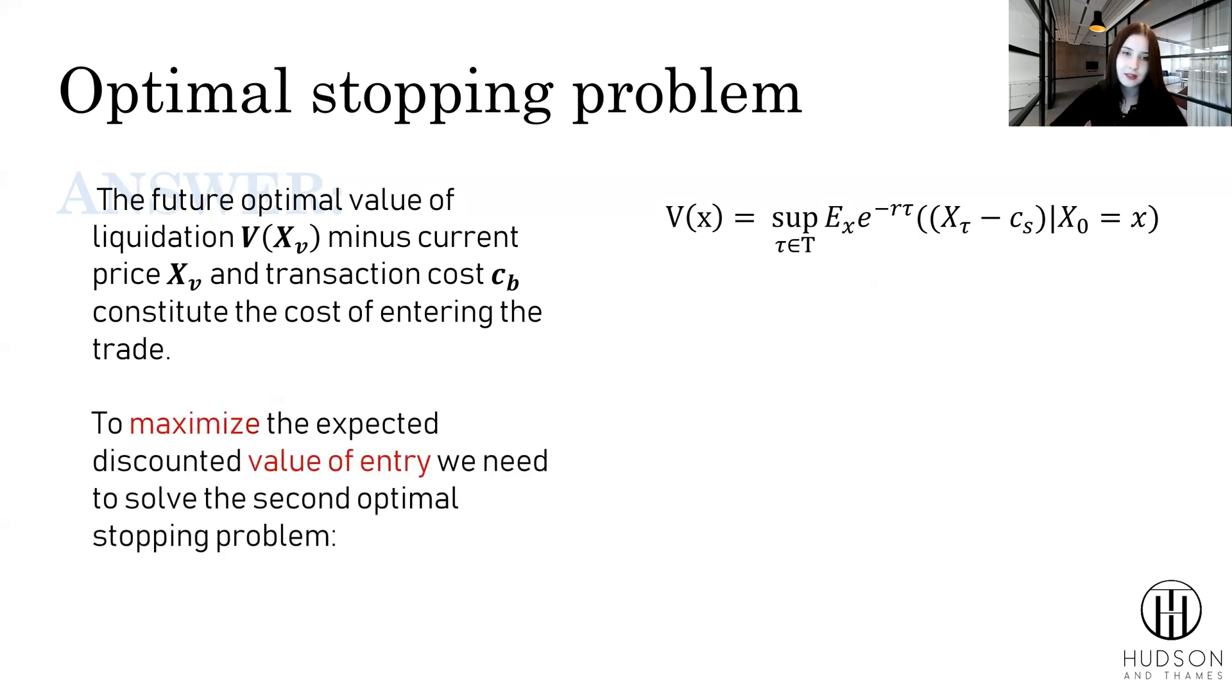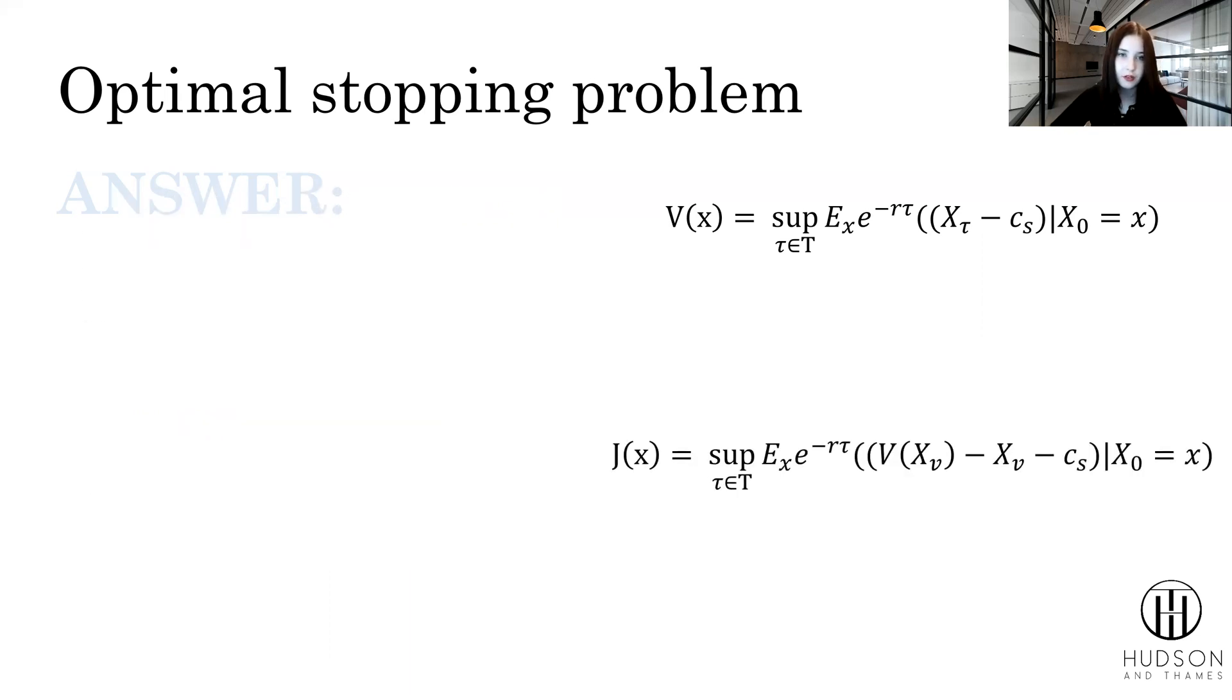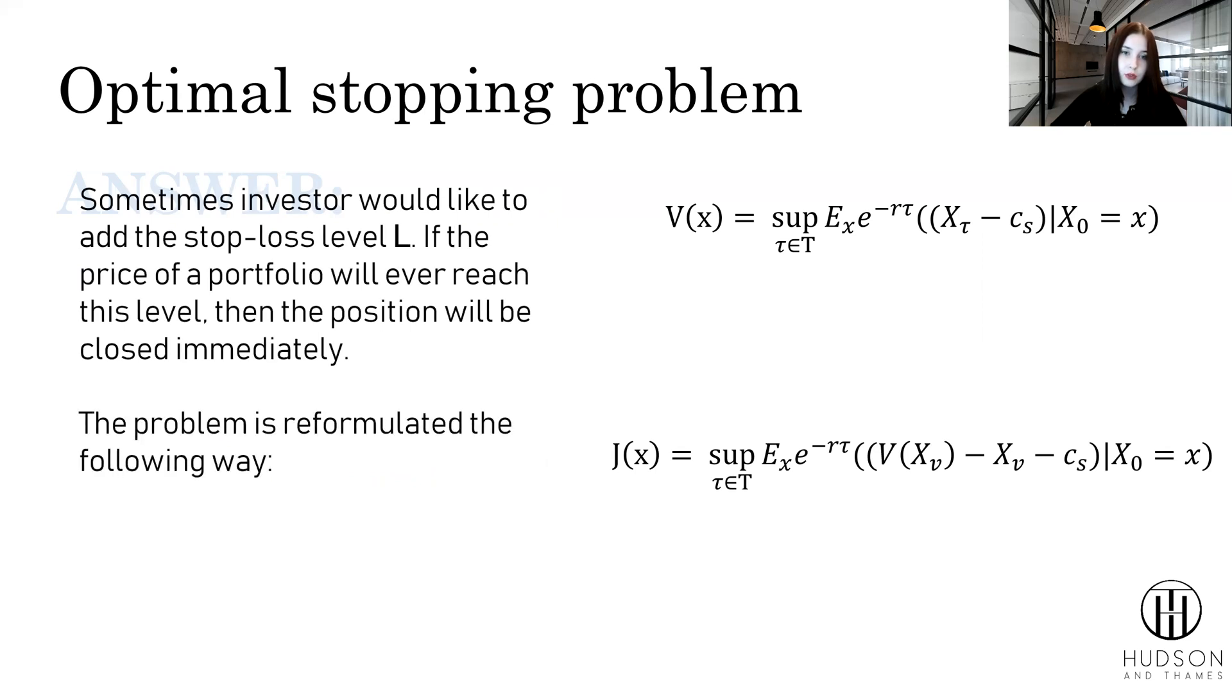We need to solve the second optimal stopping problem. It looks like so. Also, some investors would like to add the stop loss level L. If the price of a portfolio will ever reach this level, the position will be closed immediately. Then the problem is reformulated the following way.